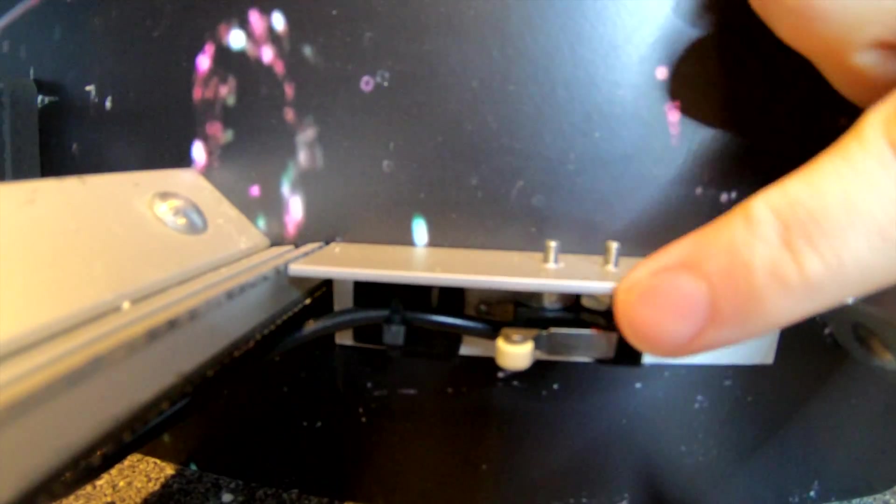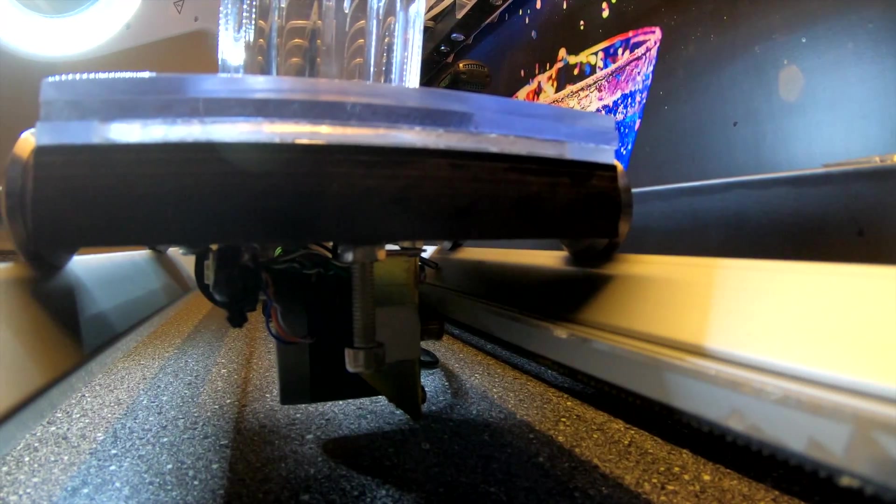Now add this micro switch to the end here. It is just put in place with two screws. Be sure to align this with the screw on the sleigh which I will talk about later on.